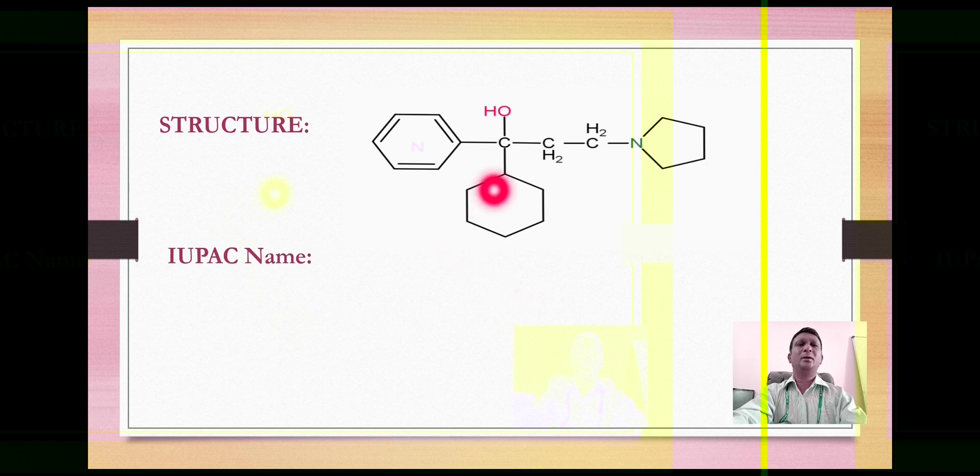Let's look at the structure of this compound. Here you can find presence of a three carbon chain: one, two, and three. On this carbon we have a hydroxyl group, so the basic functional moiety present here is an alcohol.